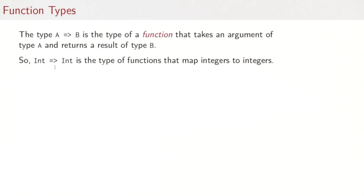One thing that's new here is a function type. Function type is written A arrow B where A and B are types. And it's the type of a function that takes an argument of type A and returns a result of type B. For example, int arrow int is a type of functions that map integers to integers.